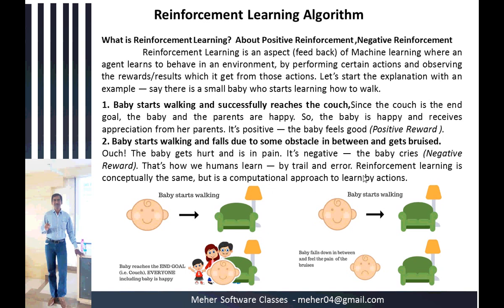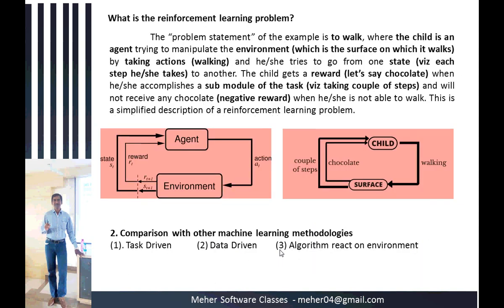In this process, through trial and error, the baby learns to walk. The proper statement of the example is: to walk, the child is an agent trying to manipulate the environment — which is the surface on which it walks — by taking actions. The agent tries to go from one state to another state.